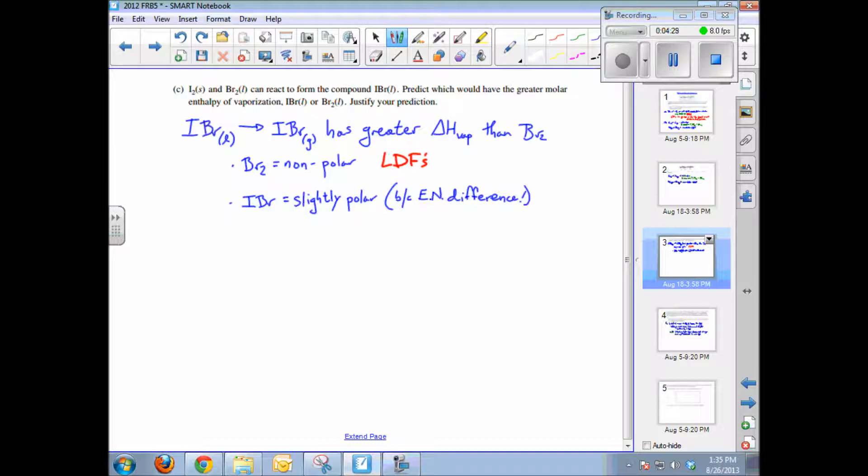Now IBr, in contrast, is slightly polar because both iodine and bromine will have slightly different electronegativities, and therefore there is a slight polarity to them. So IBr will have London dispersion forces but will also have dipole-dipole attractive forces.